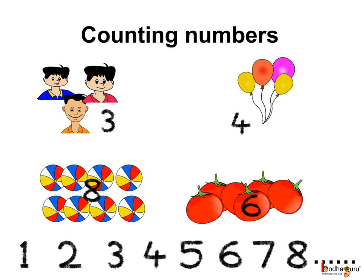How do we count things? We count using the numbers. 3 friends, 4 balloons, 6 tomatoes, 8 balls, etc.